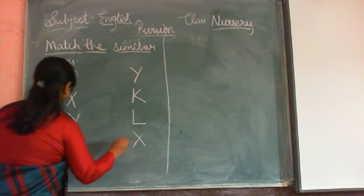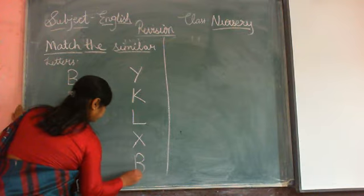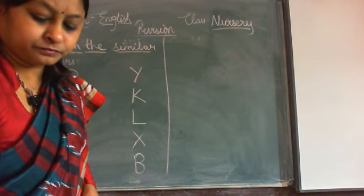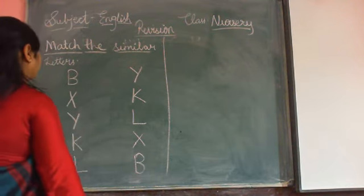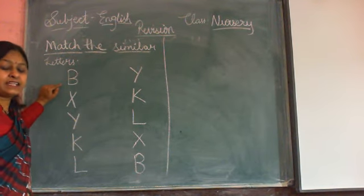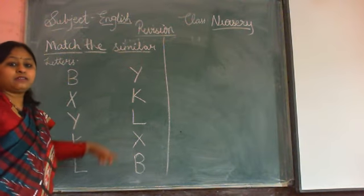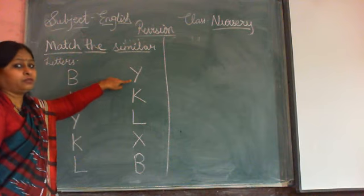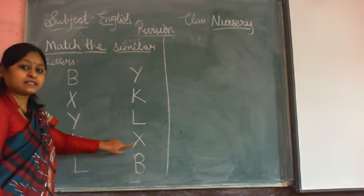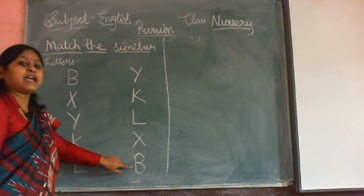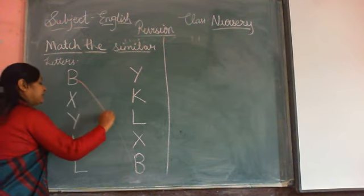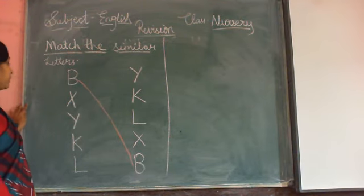Ready, all of you? Like this — what we have to do? We have to match that letter — match the similar letters. Let us match. Look here at the first letter. Which letter is this? B. Which letter is this? B. So find it here. B. Yes! So what will we do? We will match letter B with B.